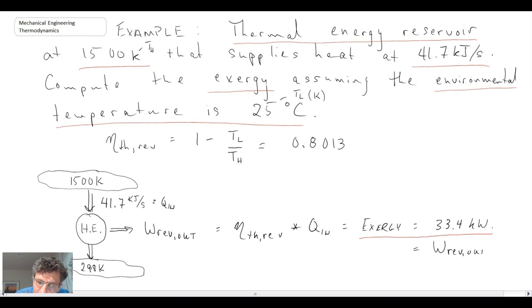Because that was the work out that would exist for a Carnot engine, which is a reversible heat engine. And this represents the amount of useful work that is available with this source, assuming that it operates in a reversible manner.